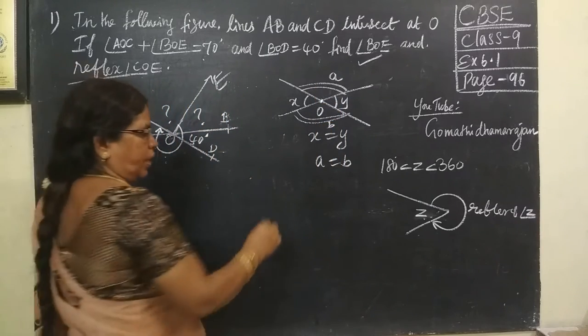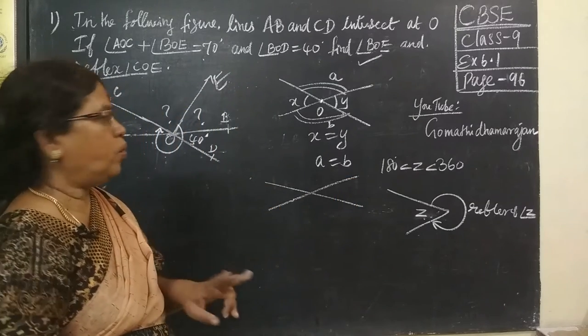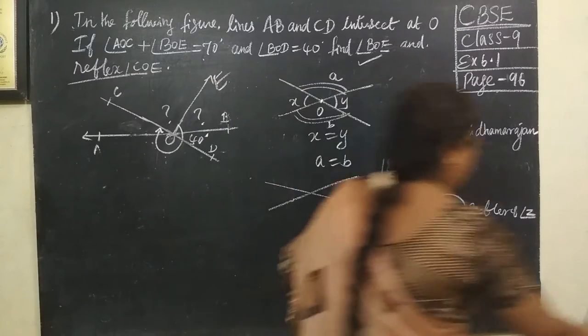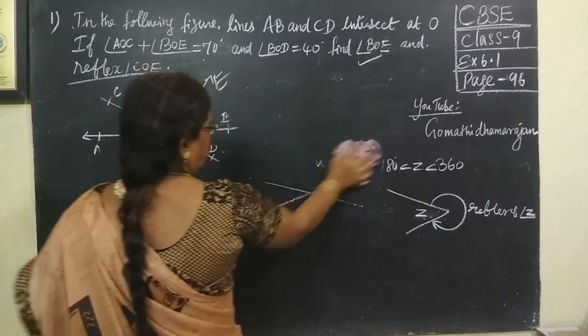So, this is vertically opposite angle. What about vertically opposite angle? When two lines intersect, we are getting two pairs of vertically opposite angles. So, using this property, we want to do the question, this is very, very easier one.